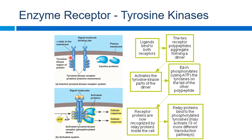Tyrosine kinase receptors typically have two subunits and require two signal molecules to bind both of them. Once that binding occurs, the subunits come together and you have a phosphorylation — an active process requiring ATP — phosphorylating these tyrosine molecules. That then leads to whatever cellular response: further cell proliferation, or effects on insulin receptors, or whatever the downstream effect happens to be after that phosphorylation.